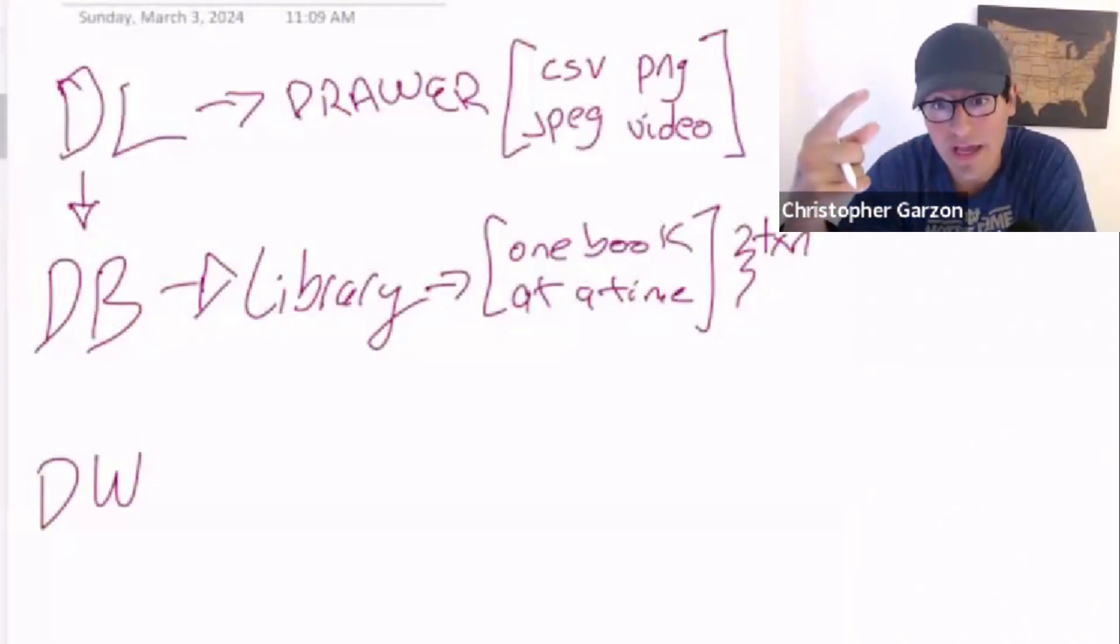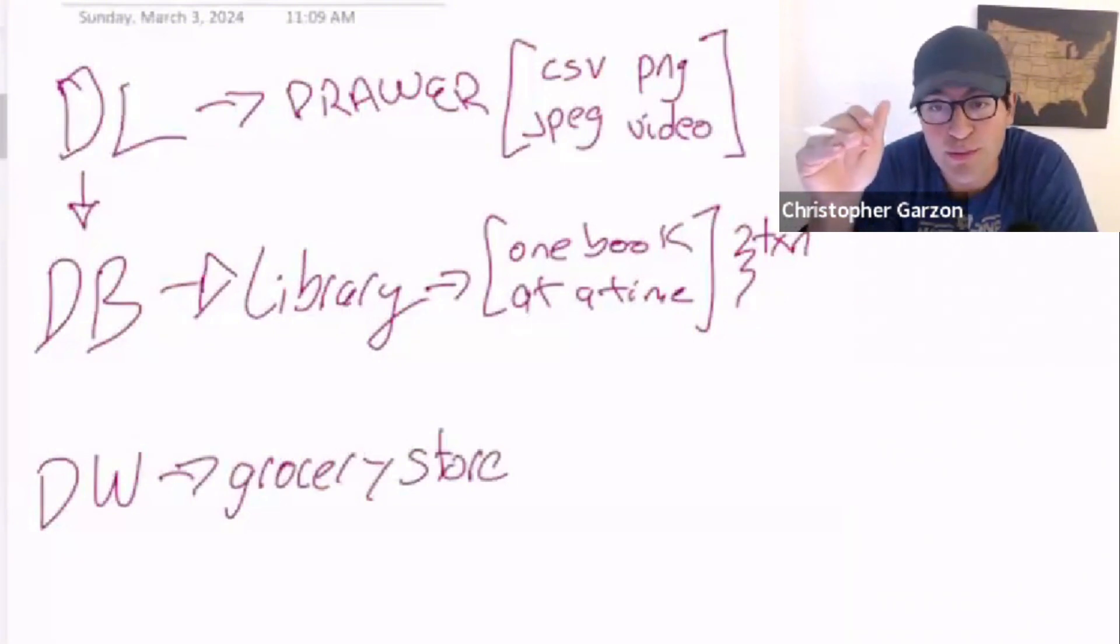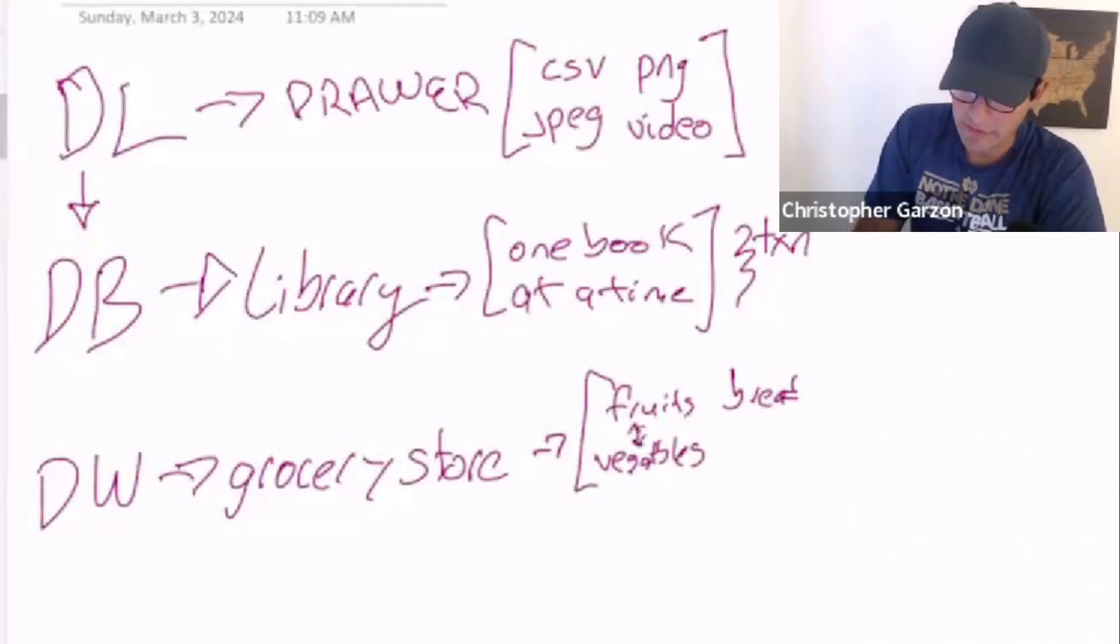Which brings me to the third case, which is a data warehouse. That is where you actually want to analyze a bunch of rows at a time. And so the example I give here is a grocery store. If you think about a grocery store, you go into the supermarket and you go into one section or one aisle. And you get different sections. So you have fruits here, you have vegetables here, you have bread here. And what's also important is that all of these are next to each other for a reason. They put the fruits and the vegetables next to each other for a reason.